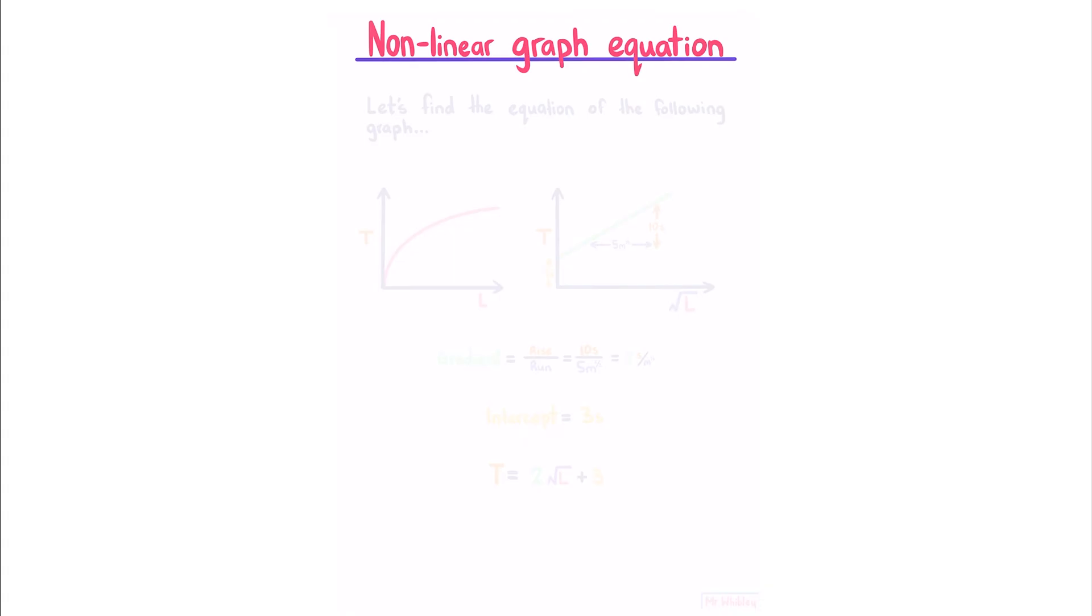Non-linear graph equation. Let's find the equation of the following graph. Staying with our square root relationship from before, plotting it so that it's linear, let's say we identify our intercept as 3, and that we have a rise of 10 over a run of 5. Our gradient is rise over run, which is 10 over 5, which gives us 2, with units of seconds divided by the square root of a meter. And since our intercept is 3, we can write the final equation as t equals our gradient of 2, multiplied by our square root l, plus our intercept of 3. Where this is our y, this is our m, this is our x, and this is our c. So we have our y equals mx plus c.